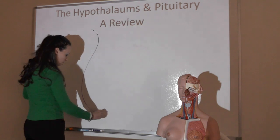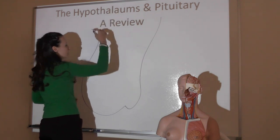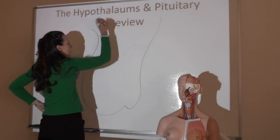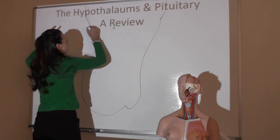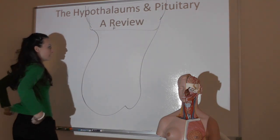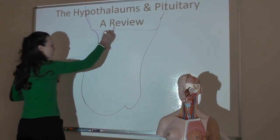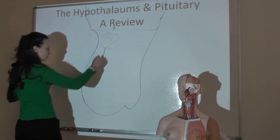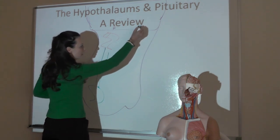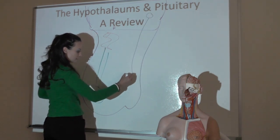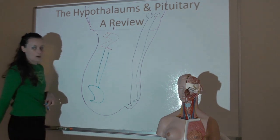As you recall, the hypothalamus is the master regulator of the autonomic nervous system and the endocrine system, and it sits up in the brain and controls everything. It's connected to the pituitary on the anterior side through a blood vessel network called the hypothalamal-hypotheseal portal system, and it's connected to the pituitary on the posterior side by sending extensions of its axons down to terminate in the region we call the posterior pituitary.